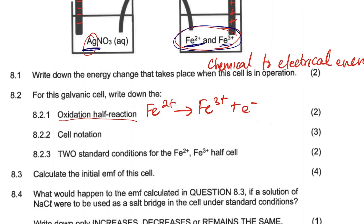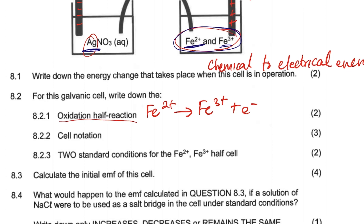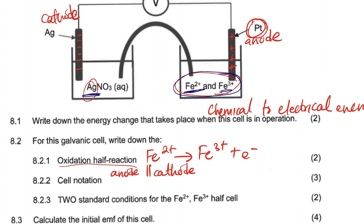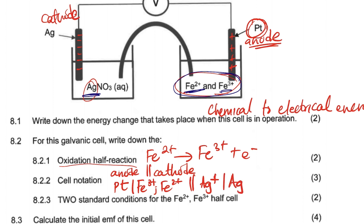Now for the cell notation: we know it includes the anode, the salt bridge, and the cathode. We have the inert platinum, so we start with platinum. The cell notation is: Pt | Fe³⁺, Fe²⁺ || Ag⁺ | Ag(s). That is our cell notation.